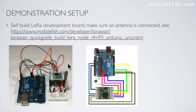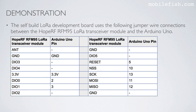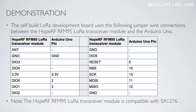This is my self-built LoRa development board. Make sure an antenna is connected. Go to this web page to see how to create this self-built LoRa development board. The self-built LoRa development board uses the following jumper wire connections between the Hope RF RFM95 LoRa transceiver module and the Arduino Uno. Please note the Hope RF RFM95 LoRa transceiver module is compatible with the SX1276.